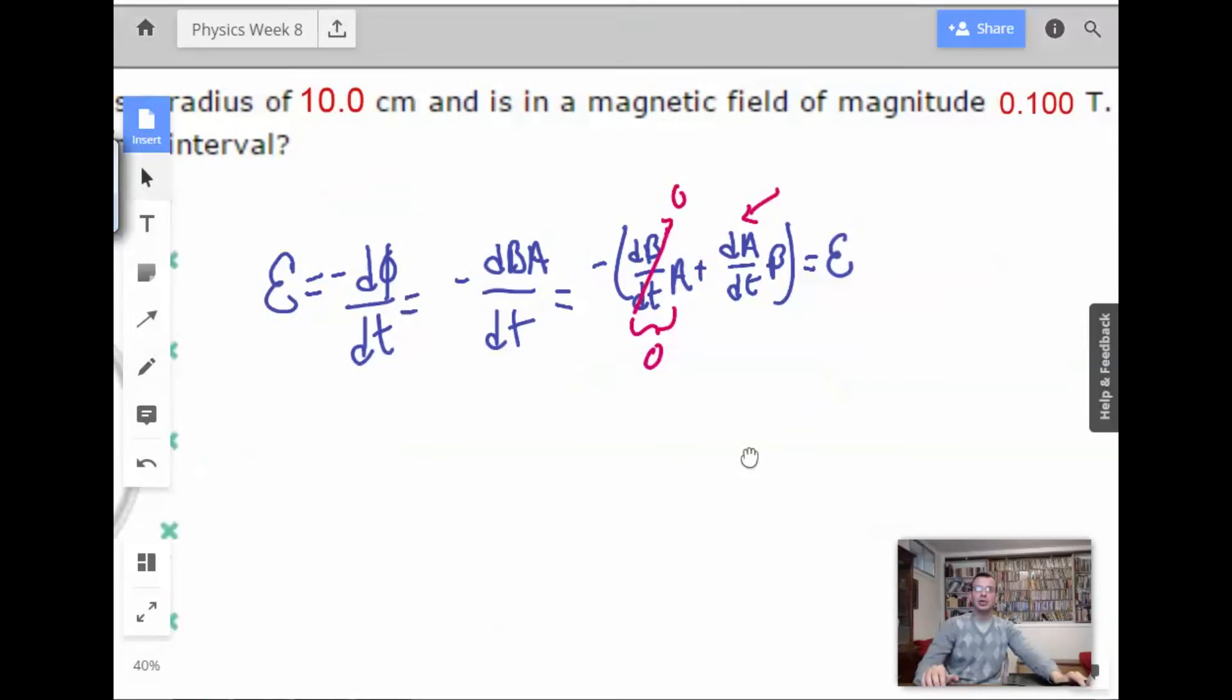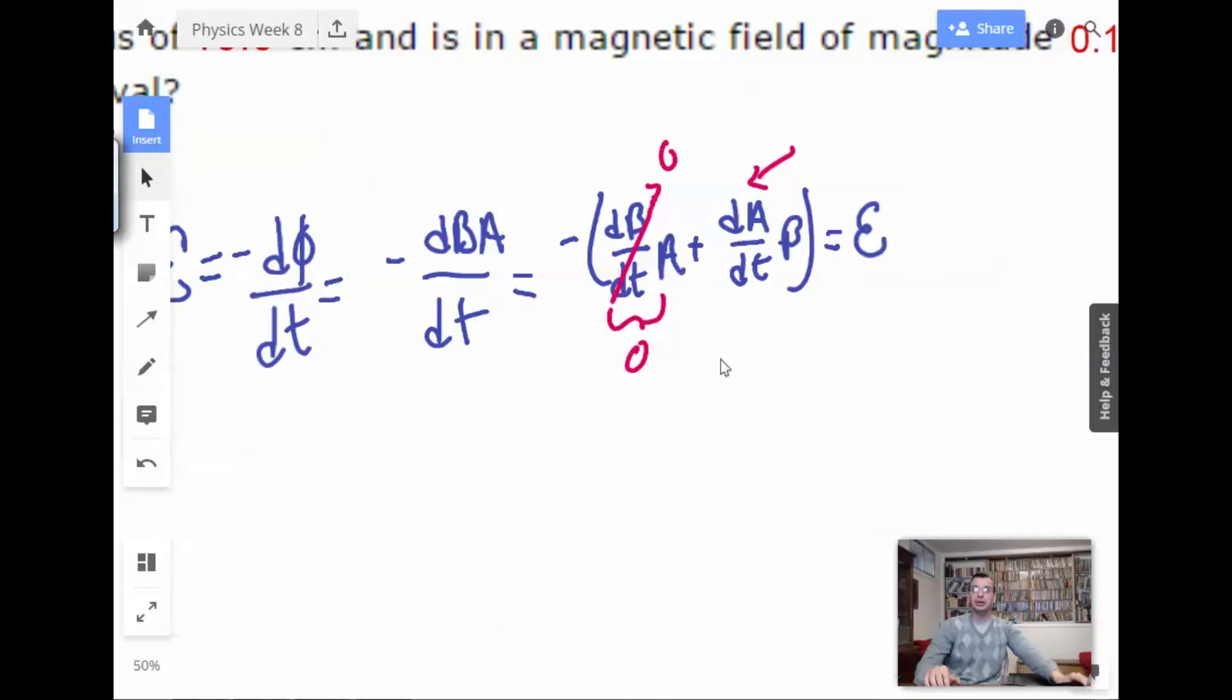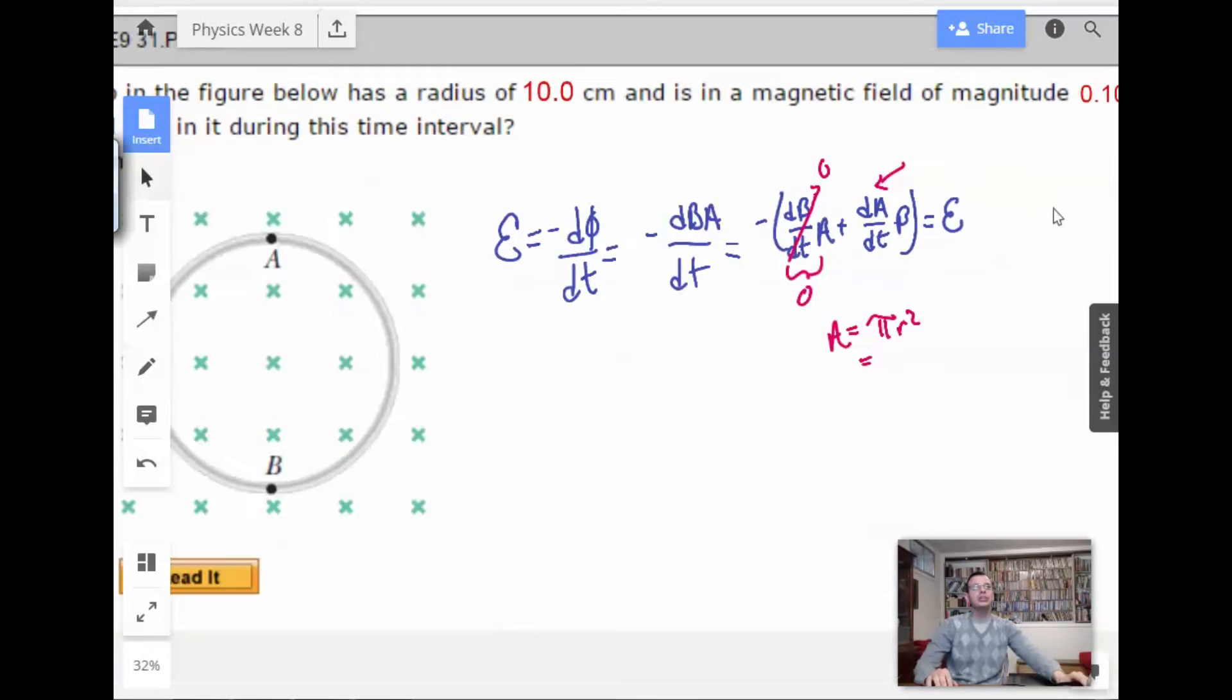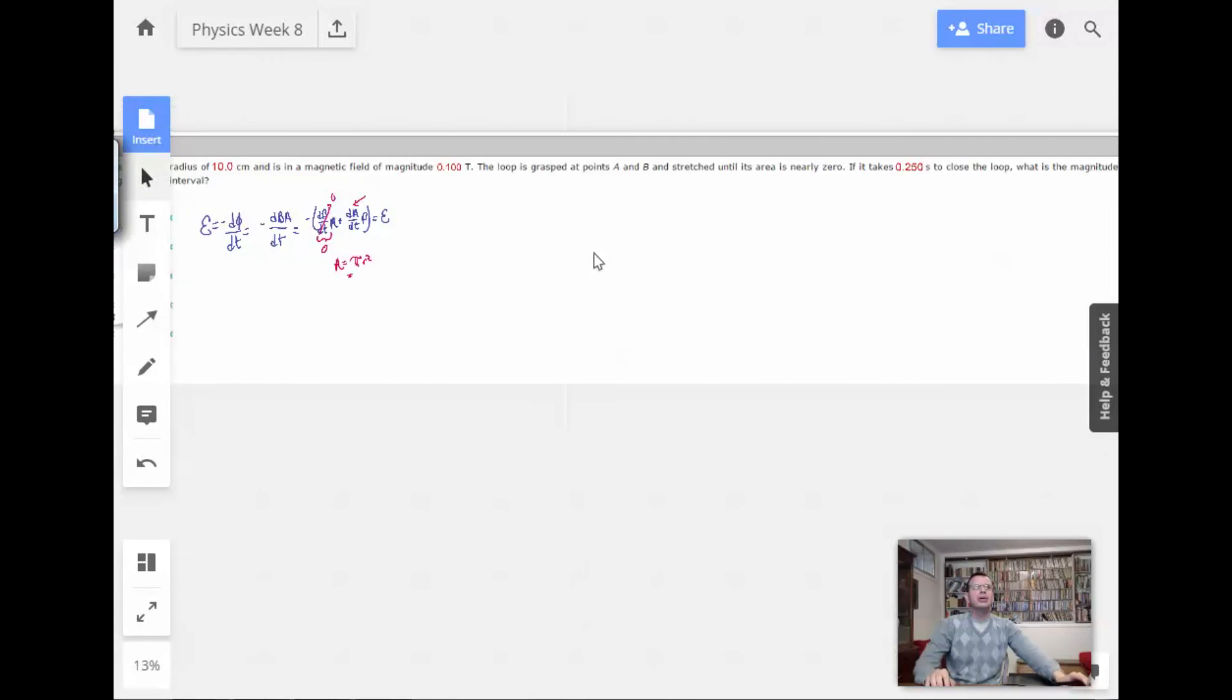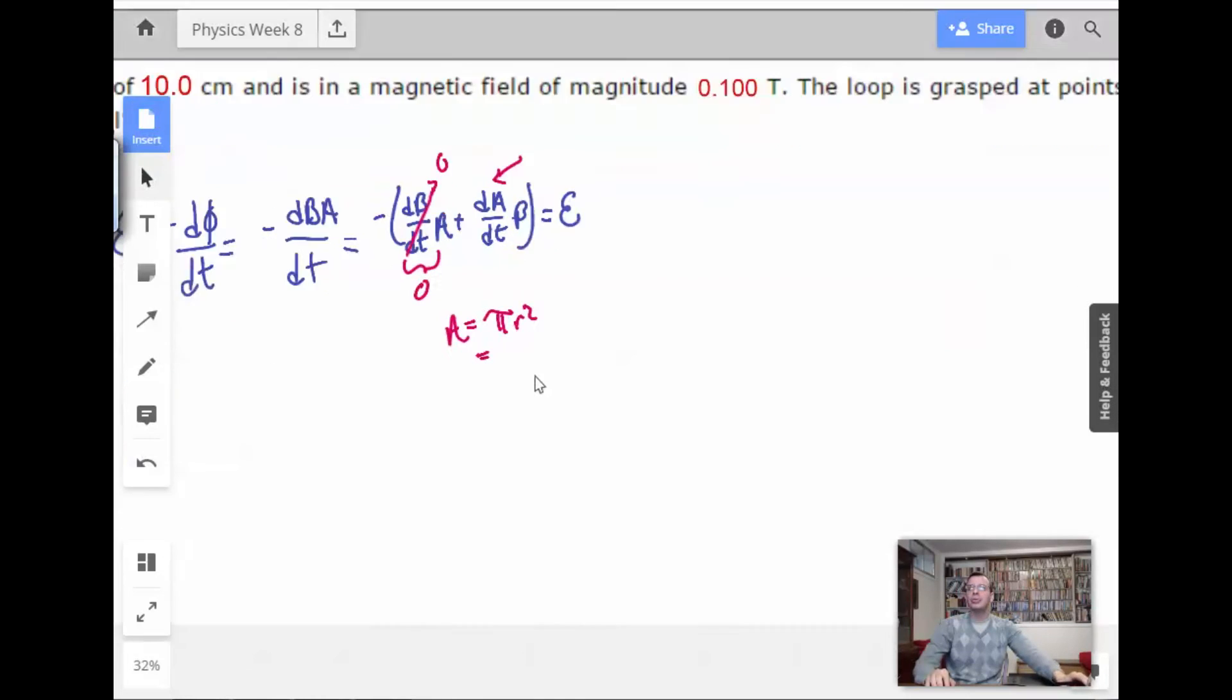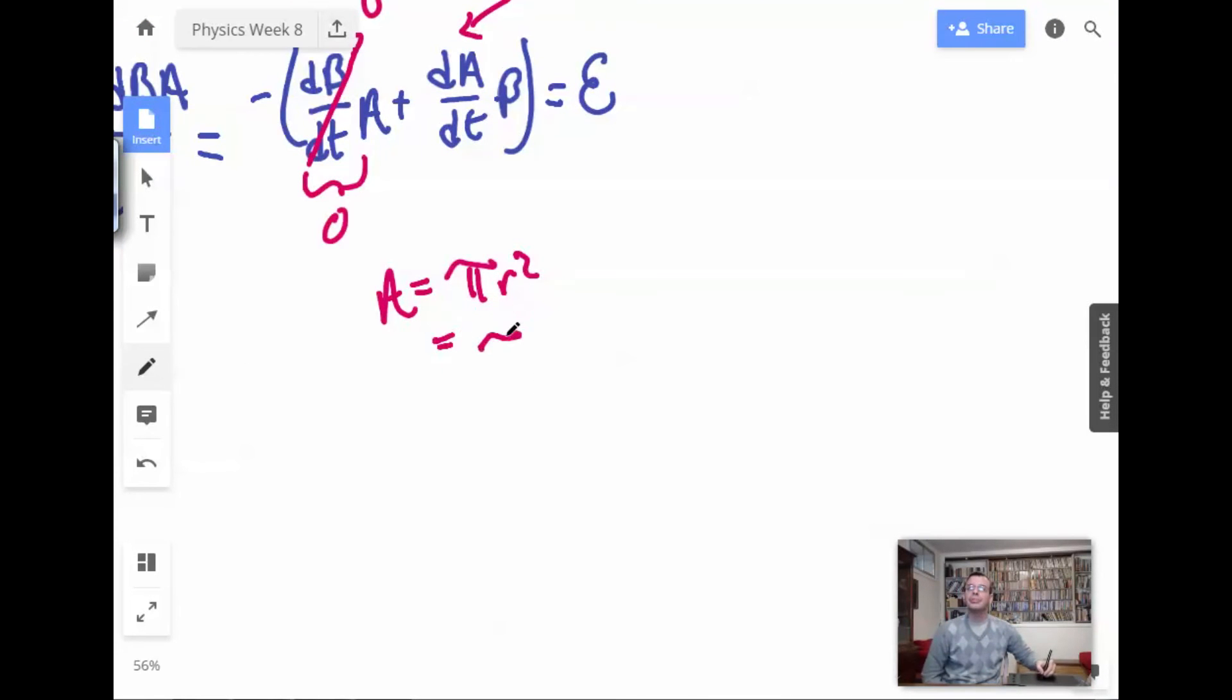Now, we're not going to get, we're just looking for average here. So, what I'm going to do is I'm going to find the area. Area equals pi r squared. We know that r is, what is r? Ah, 10 centimeters, 0.1. So, pi times 0.1 squared equals, so 1 tenth squared is like 1 hundredth. So, I'll do pi over 100, which equals 0.0314.